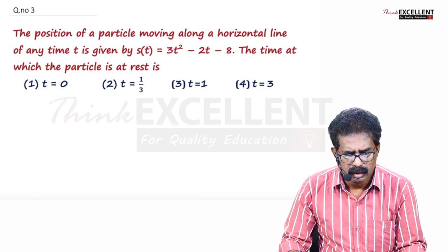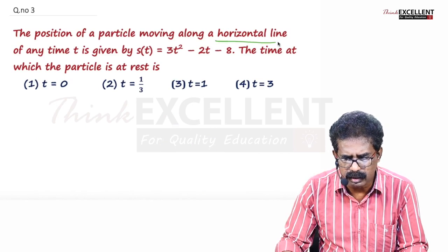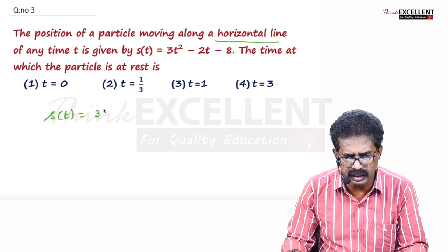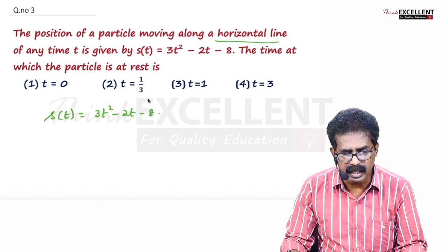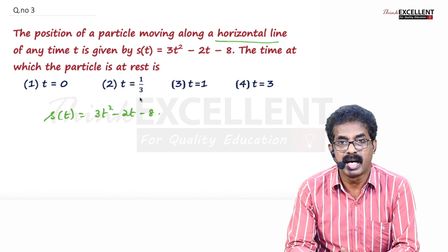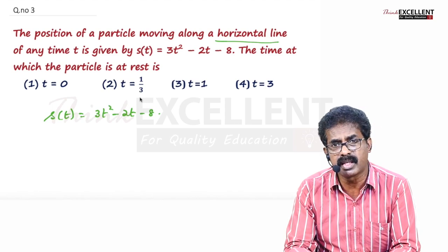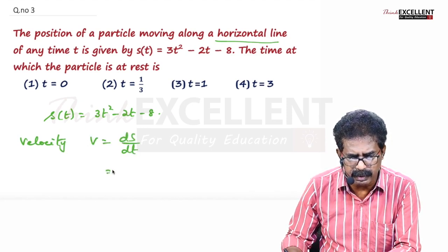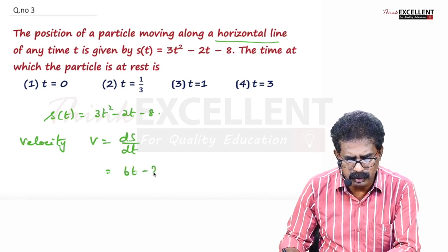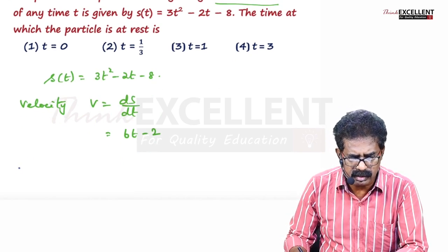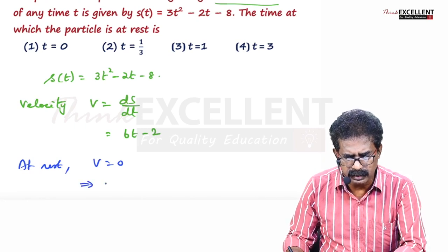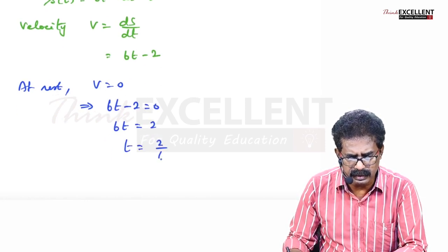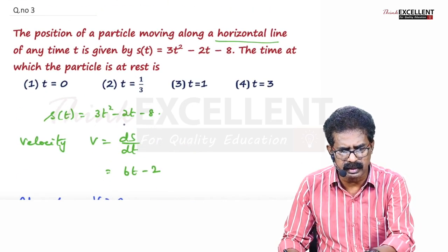Question number 3. The position of a particle moving along a horizontal line at any time t is given by s(t) = 3t² − 2t − 8. Find the time at which the particle comes to rest. At rest means velocity = 0. Velocity V = ds/dt = 6t − 2. Setting 6t − 2 = 0 gives t = 1/3. The correct answer is option number 2.